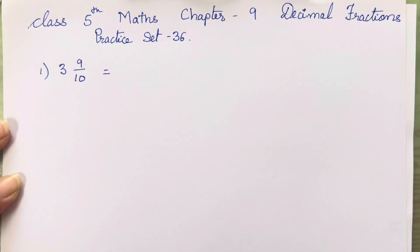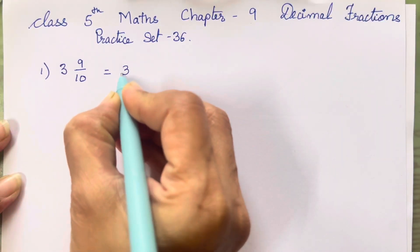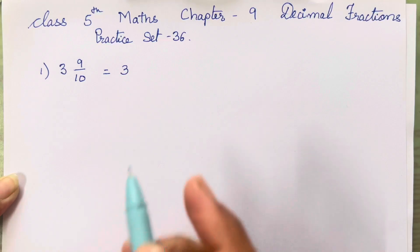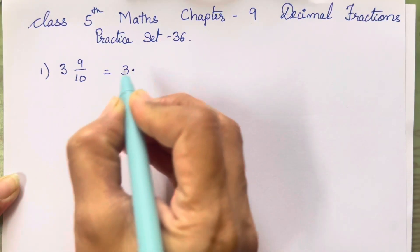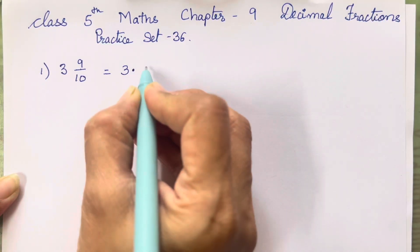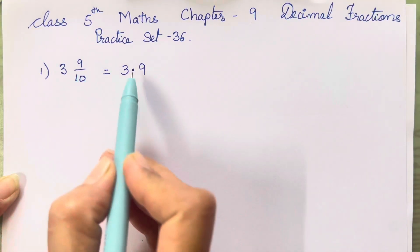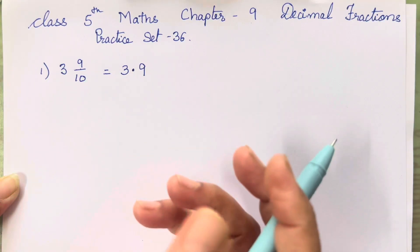We write 3 first, before the decimal point. Then we add a decimal point and write 9. After the decimal point there should be one digit when the denominator is tens.